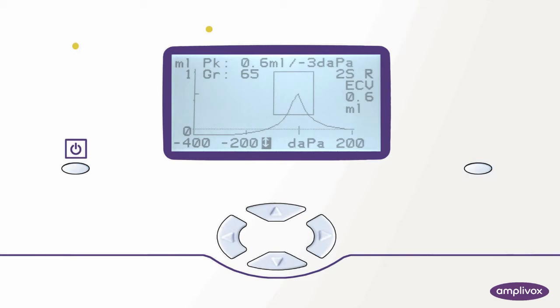After the measurement is successfully completed, we can review the test results on the display. First, we'll see the tympanogram and its additional information like the ear canal volume, the pressure and volume where the maximum compliance point was found, and the gradient.